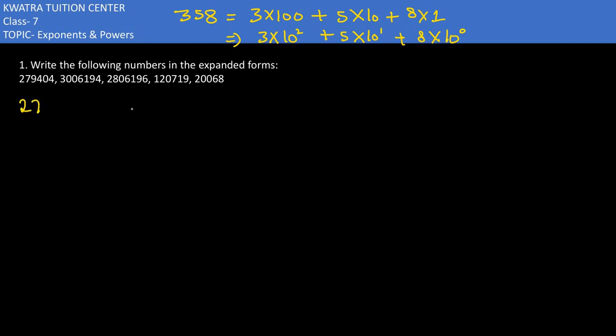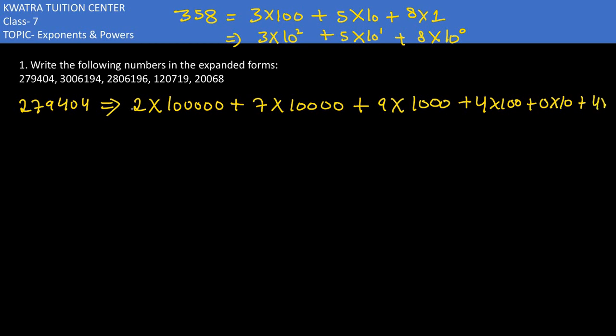So we can understand which place it will be. First is 100,000, then we have 7 at 10,000 place, 9 has place value of 1,000, then we have 4 with place value 100, and then last 4 would be at the units place.